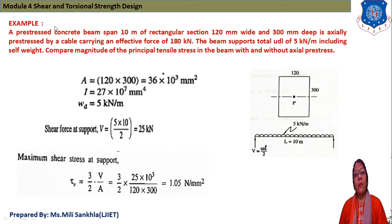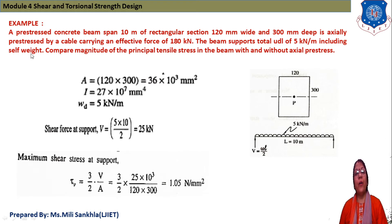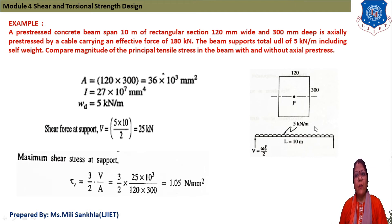Example 1: A prestressed concrete beam of span 10 meters has a rectangular section 120 mm wide by 300 mm deep. It is subjected to an effective prestress force of 180 kN at the center, and supports a UDL of 5 kN/m including self-weight. We need to compare the magnitude of principal tensile stress with and without the prestress.